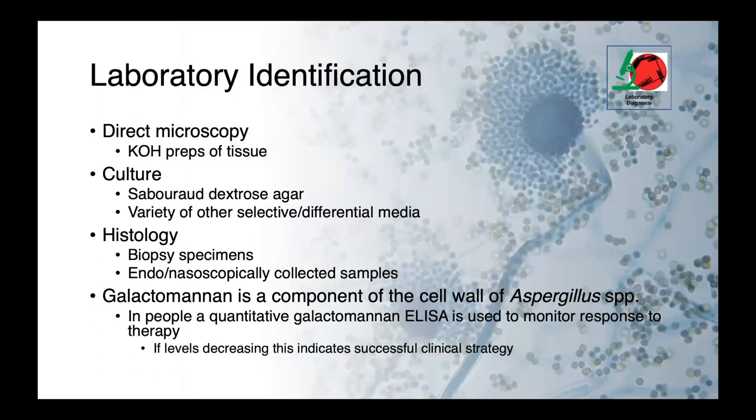Aspergillus can be identified using direct microscopy, and this is really important. We can use KOH preps of tissues — concentrated potassium hydroxide to degrade host tissues, making fungal elements more visible. We can culture these organisms on Sabouraud dextrose agar or a variety of other selective and differential media. Histology or cytology is also very important, looking at biopsy specimens or nasal or endoscopically collected samples.